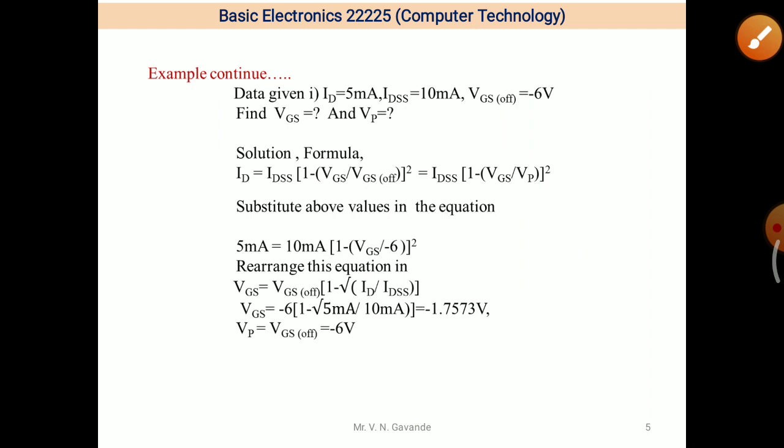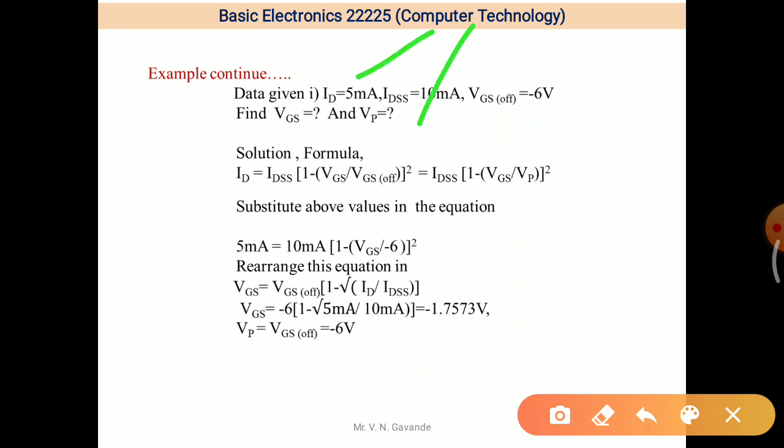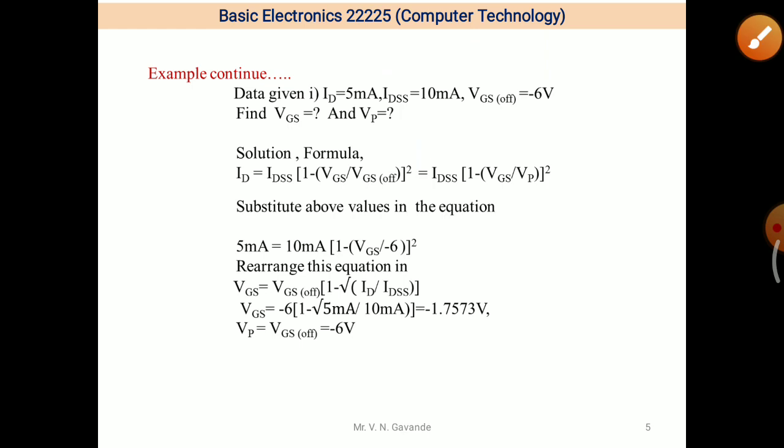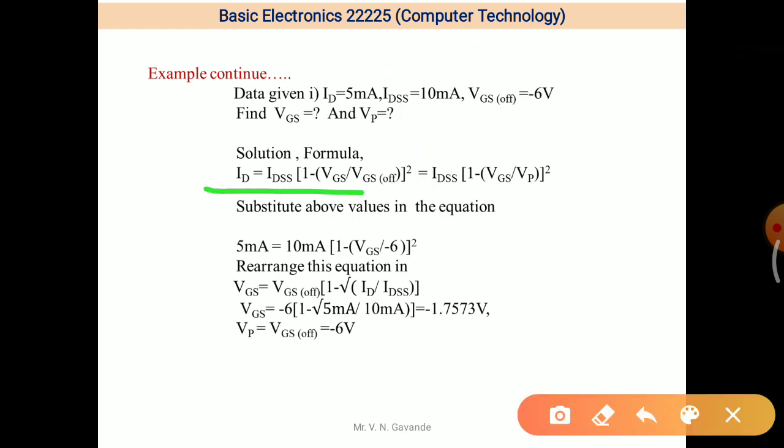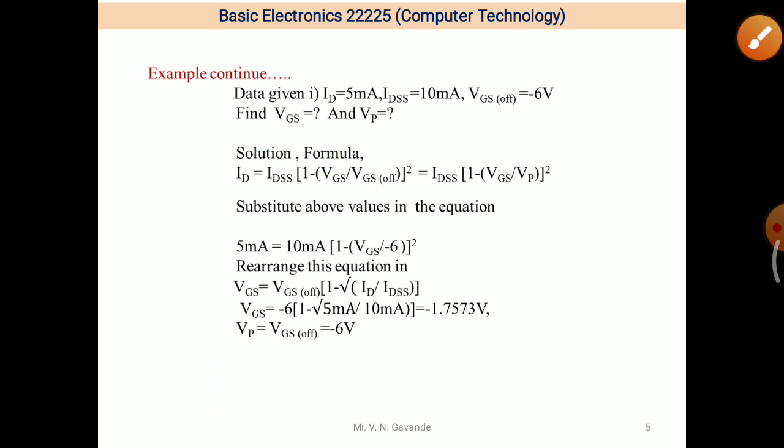Now second part of this. Data is given: ID is equal to 5 mA, IDSS is equal to 10 mA, and VGS OFF is equal to minus 6. And find out VGS and VP. We have to use this formula. A parabolic curve relation between Y axis and X component, or it is also called Shockley's equation. It gives us relation between ID and VGS. ID on Y axis, VGS and VGS on X axis for VDS is equal to 0.